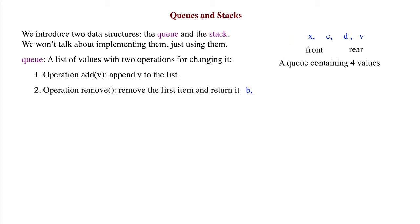The easy way to remember this is the following: while Cornell students stand in a line to buy hockey tickets, the British stand in a queue to buy tickets for a cricket match. A queue is also called a FIFO list, FIFO standing for first in, first out.